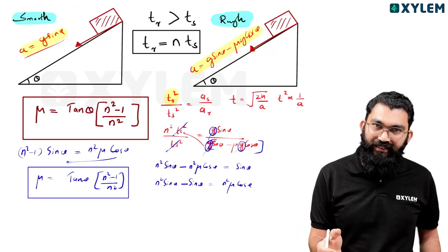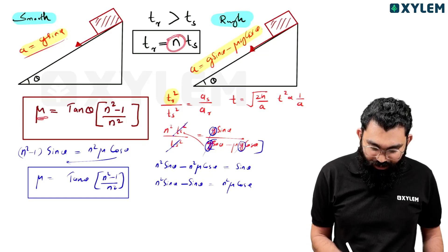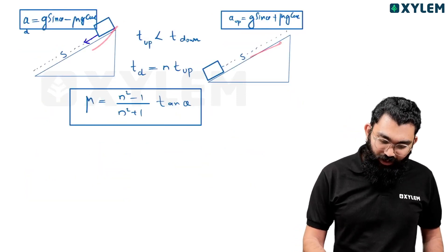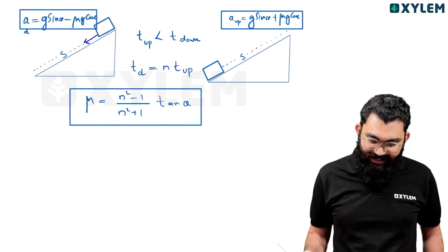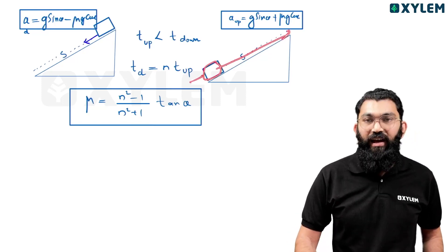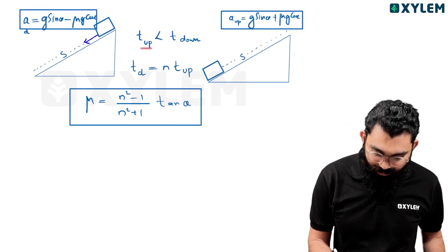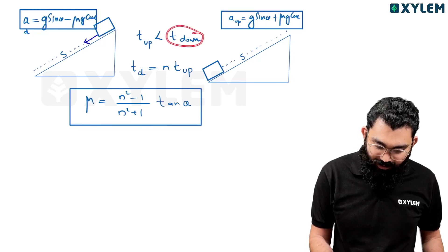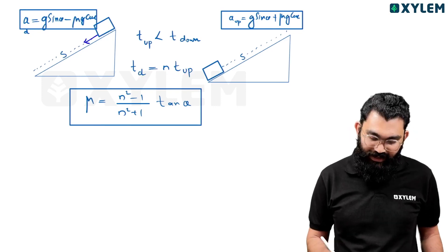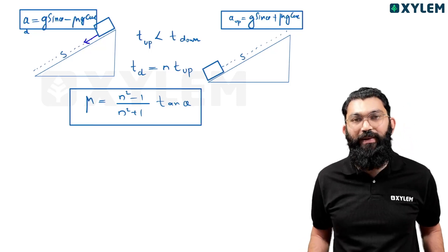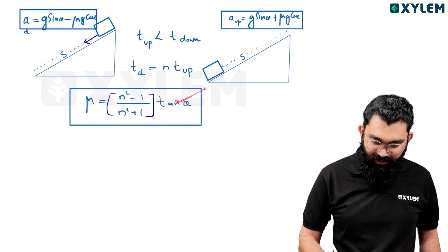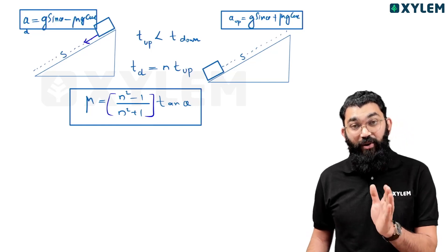The ratio of rough to smooth surface times is n, and μ equals tan θ times (n² minus 1) divided by n². For the ascent-descent scenario on a single rough surface, if time of descent equals n times time of ascent, the direct equation gives: μ equals tan θ times (n² minus 1) divided by (n² plus 1).